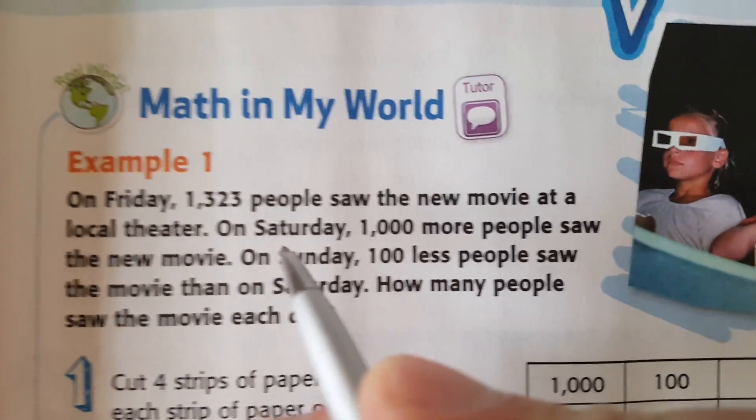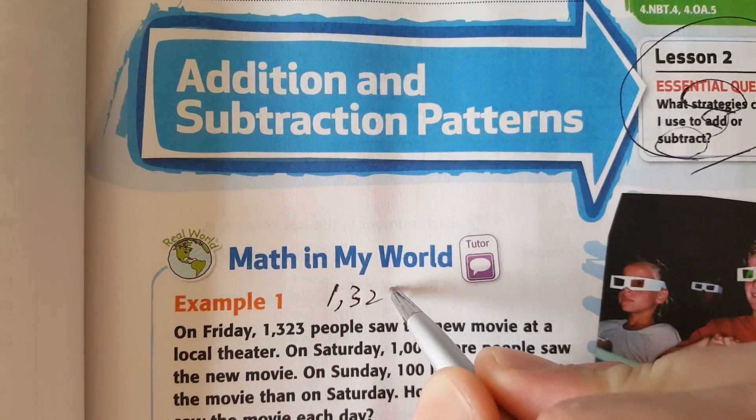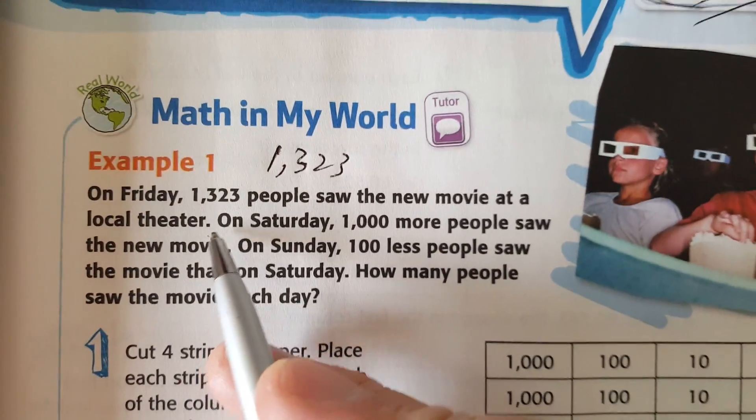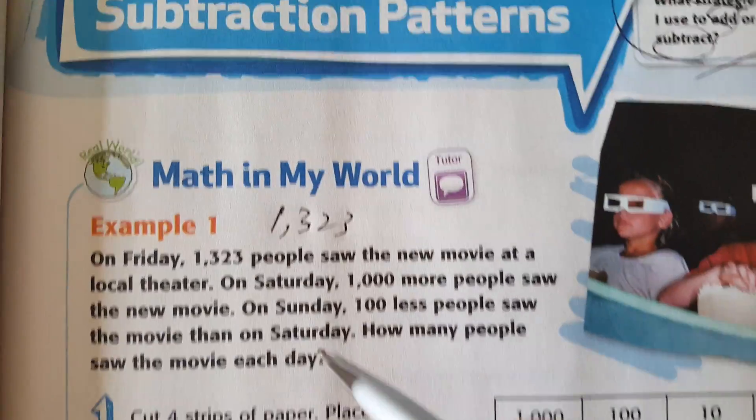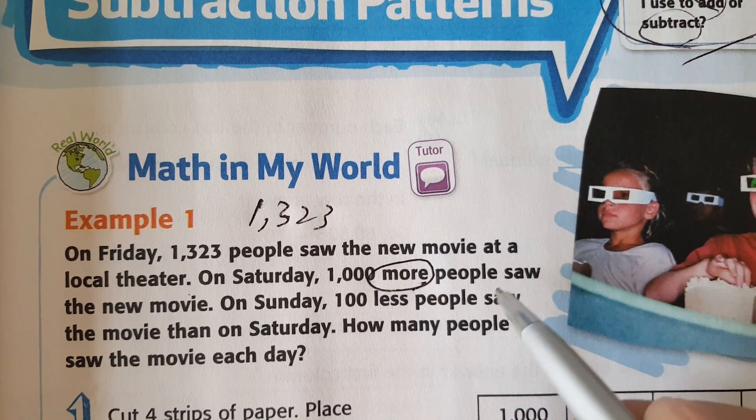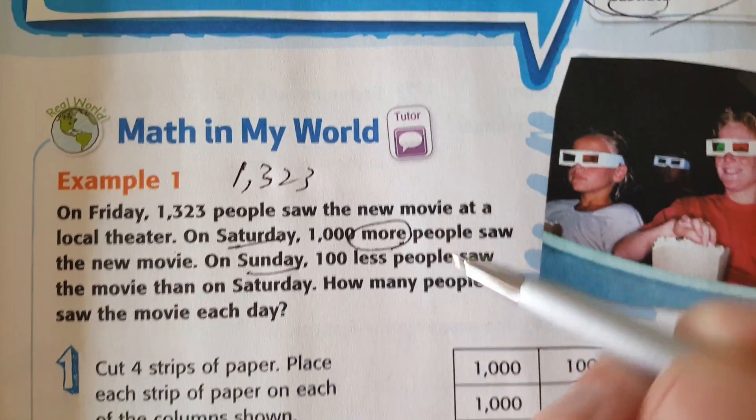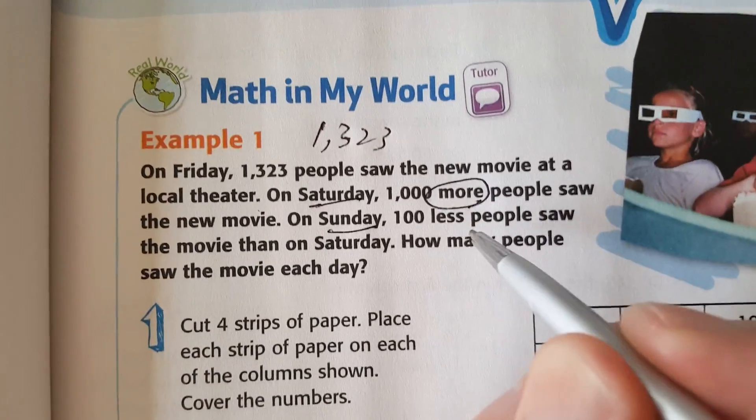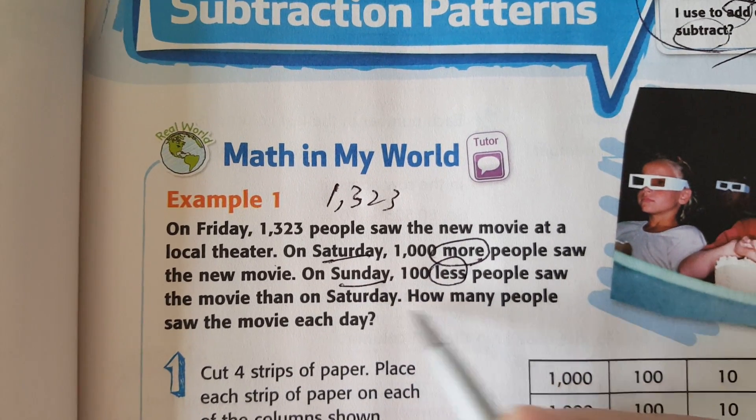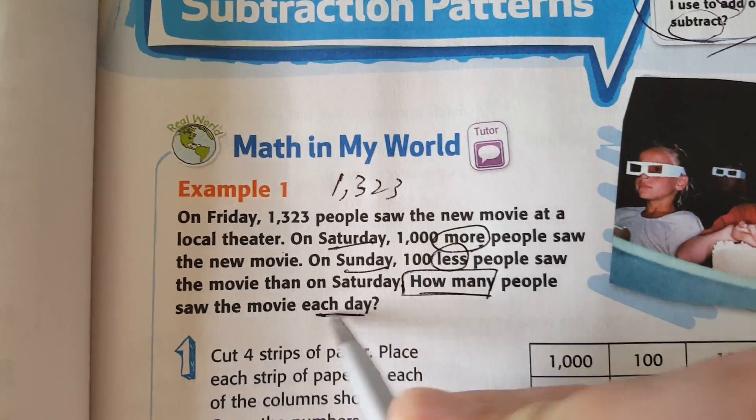So right away they jump into a word problem. On Friday, 1,323 people, let's just write the number right away, saw the new movie at a local theater. On Saturday, 1,000, keyword more, people saw the new movie. So Friday, Saturday, Sunday, 100 less people saw the movie than on Saturday. How many people saw the movie each day?